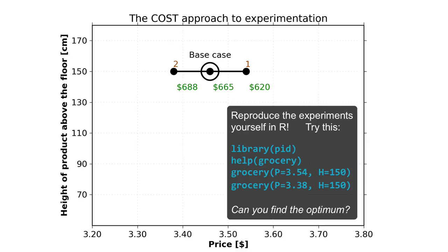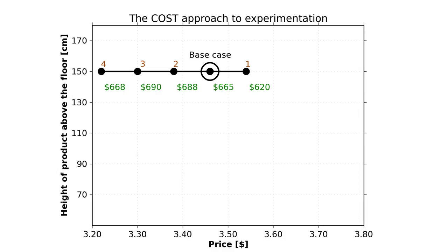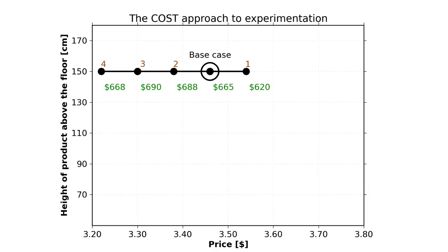It looks like we're going in the right direction now. We lower the price again to $3.30 and record a profit of $690. Like we saw in the previous video, we're probably starting to level off. Let's double check — reducing the price further to $3.22 gives a profit of $668, almost back to where we started. So we go back to the best point: a sales price of $3.30 with a profit of $690.